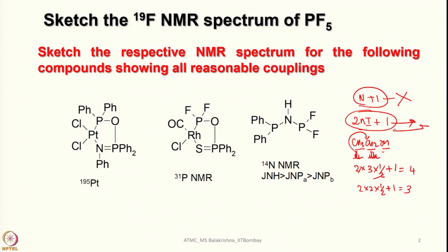The 19F NMR would show a doublet, but on the other hand, if we assume it is a static molecule, then the 2 axial fluorines are different from the 3 equatorial ones. The axial fluorines will first split by P-F coupling to give a doublet, and then each line of the doublet will be further split into a quartet because of the 3 equatorial fluorines. On the other hand, the 3 equatorial fluorines will first split by phosphorus into a doublet, and each line in the doublet will be split into a triplet because of the 2 axial fluorines.